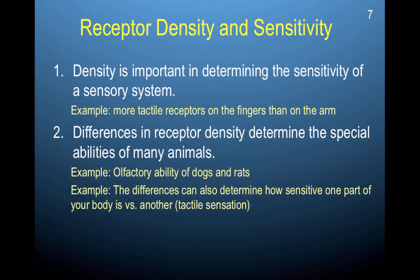Differences in receptor density determine the special abilities of many animals. For example, the density of olfactory receptors for dogs is very high, giving them an ability to smell and hear things that we don't. The same goes for rats. All sorts of animals have receptors that are particularly advantageous for them. These differences also determine how sensitive one part of your body is versus another — for example, if you cut your finger, even a paper cut can cause a lot more pain and aggravation than a similarly sized cut on your arm, partly because of the high receptor density in your fingertips versus the much lower density on your arm or back.